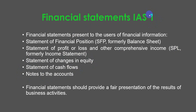IAS number one deals with the statement of financial position, or SFP. Previously it was called the balance sheet but the name was changed to statement of financial position. IAS 1 also deals with the statement of profit or loss and other comprehensive income, shortened to SPL. Previously it was called the income statement.